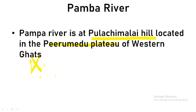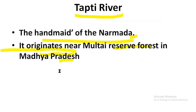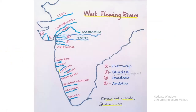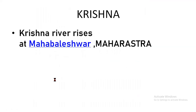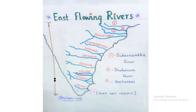Now we are going to see about east flowing rivers. East flowing rivers are very, very important — they are the lifeline for the people of South India. First we have to look at Subarnarekha, Damodar River, Baitarani River, Brahmani River, Mahanadi, Vamsadhara, Godavari, Krishna, Pennar, Palar, Ponnayar, Kaveri, and Vaigai. We have to know this order of rivers flowing towards the east.